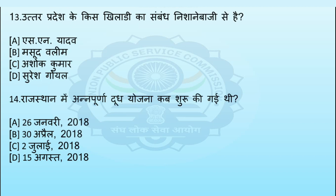अगला प्रश्न: उत्तर प्रदेश के किस खिलाड़ी का संबंध निशानेबाजी से है? Option A: एसन यादव, Option B: मसूद वलीम, Option C: अशोक कुमार, Option D: सुरेश गोयल। इस प्रश्न का सही उत्तर Option B – मसूद वलीम है।